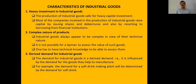For example, a papad-making machine is an industrial product, while papad itself is a consumer product. We do not require training to purchase or use papad, but we do require training to use the papad-making machinery. Another characteristic is derived demand — the demand for an industrial product depends on the demand for the corresponding consumer product.